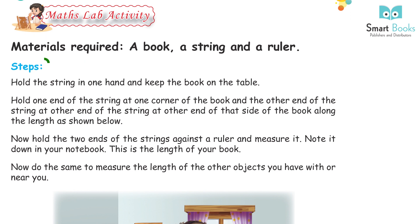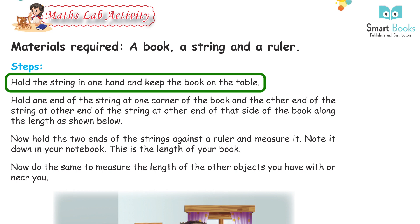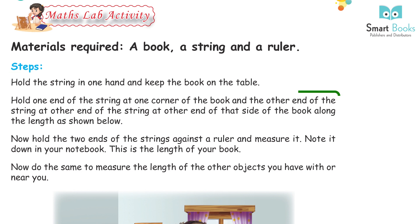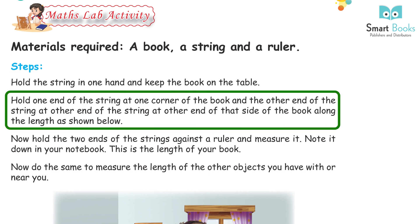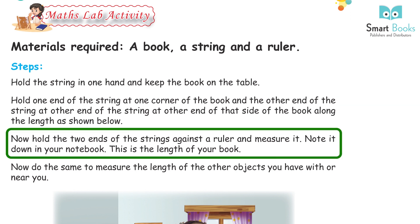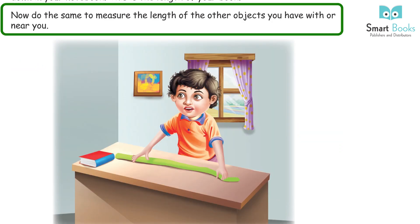What do we measure using kilometers? Distance. Standard units of capacity? Liter and milliliter. Which standard unit is used to weigh light objects? Grams. Math slab activity: Materials required — a book, a string, and a ruler. Hold the string in one hand, keep the book on the table, hold one end of the string at one corner of the book and the other end at the other end of that side. Hold the two ends against a ruler and measure it. This is the length of your book. Repeat for other objects.